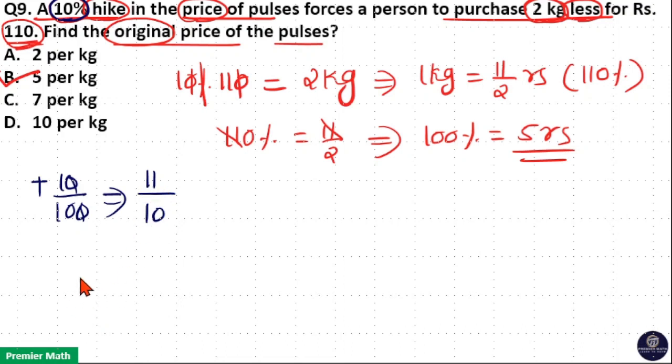Now this is price ratio. Take the reverse of this price ratio, which is equal to 10 by 11. Now this is the quantity ratio.